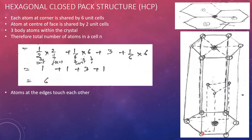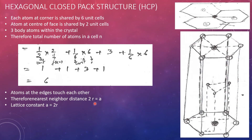The corner atoms touch each other, so the nearest neighboring distance is 2R, which equals the side length a of the cell. Hence the lattice constant is given as a = 2R.